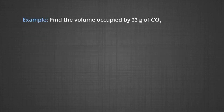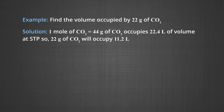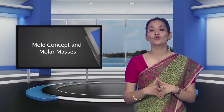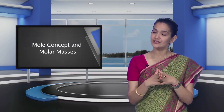Another example: find the volume occupied by 22 grams of carbon dioxide. Since 1 mole of CO₂ = 44 grams occupies 22.4 liters at STP, 22 grams of CO₂ will occupy 11.2 liters. You can use simple unitary method in solving such questions once the mole concept is known.